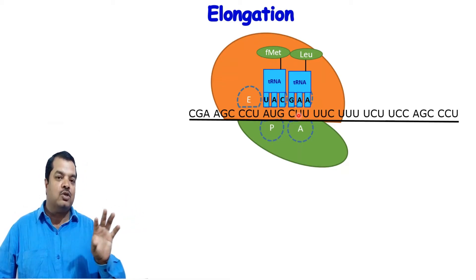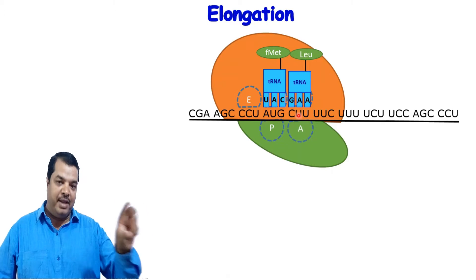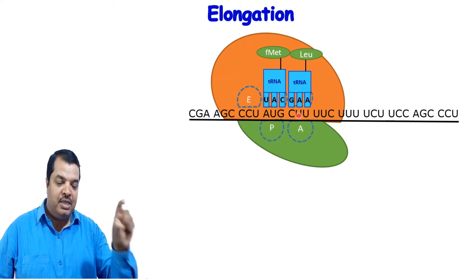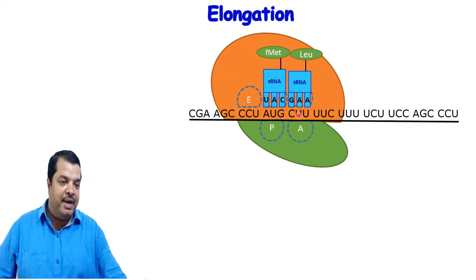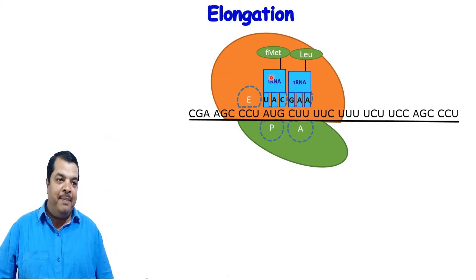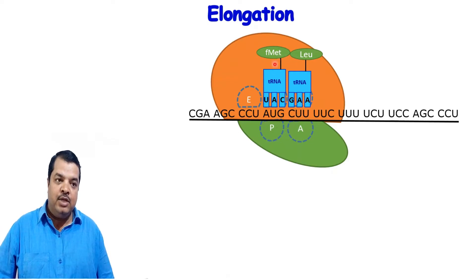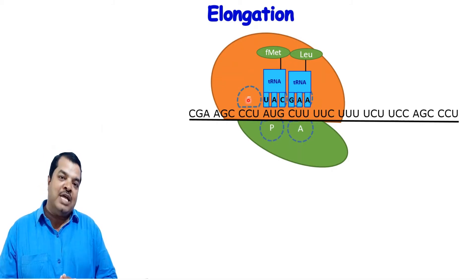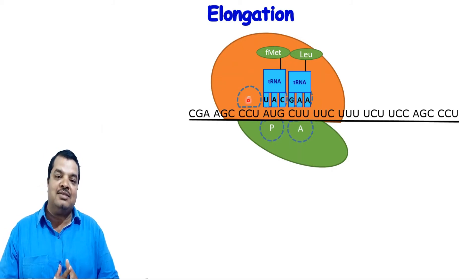The ribosome will move forward along the mRNA sequence in the 5' to 3' direction. Before this process, we need hydrolysis of the apmet (aminoacyl-tRNA). This will lead to peptide bond formation. The peptide bond formation occurs with the help of ribozyme and 23S rRNA.